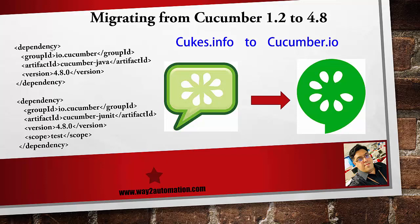In case you are using a Cucumber project with JUnit, you'll need one cucumber-java dependency and the other is cucumber-junit. If you want to use a TestNG integration with Cucumber, instead of cucumber-junit you should use the TestNG part. Since we'll be working on Maven, we'll get these dependencies downloaded from the Maven centralized repository.